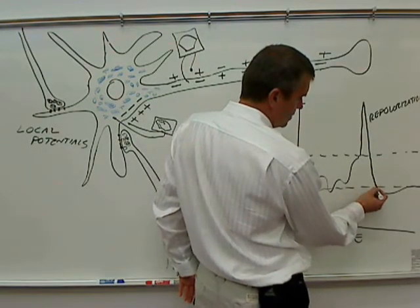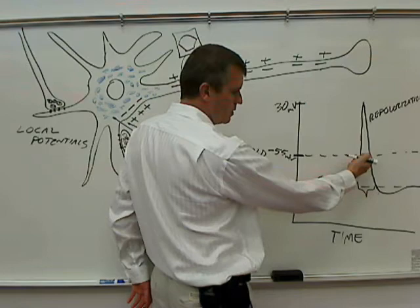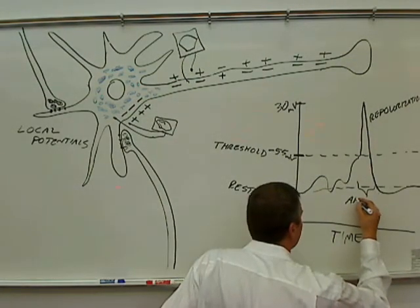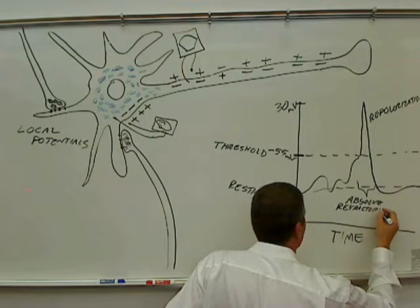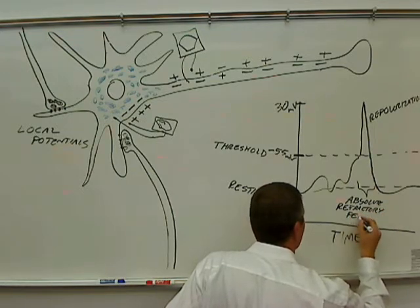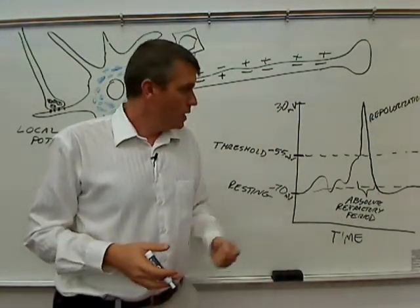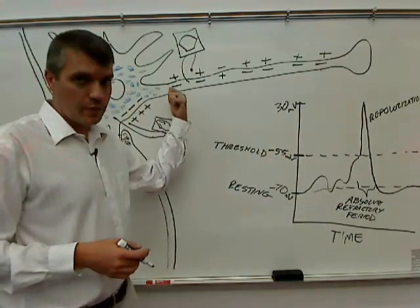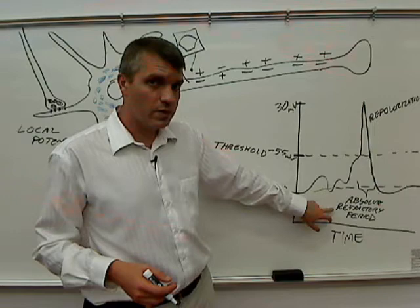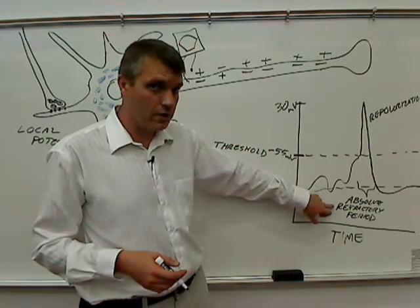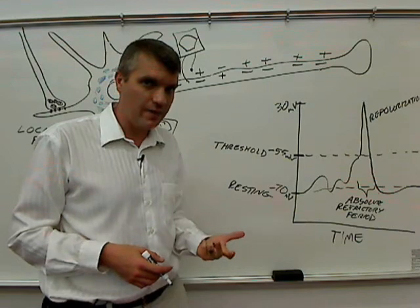I'm going to give you two terms. Because this region here on this curve, where we went depolarization and then repolarization, this is called the absolute refractory period. By absolute refractory period, the term refractory means it's going to be difficult to cause this neuron to produce another action potential. By saying absolute refractory period, what we're saying is it's not possible to cause another action potential right now. If there's already an action potential happening, we can't stimulate another one to happen at the same time.